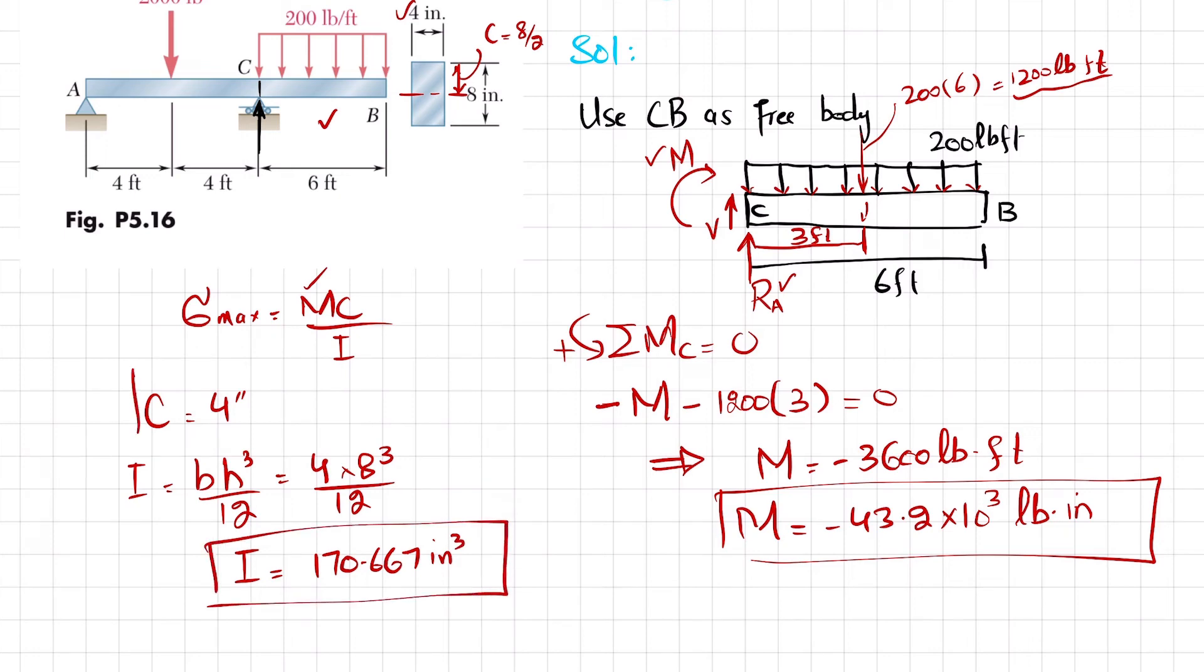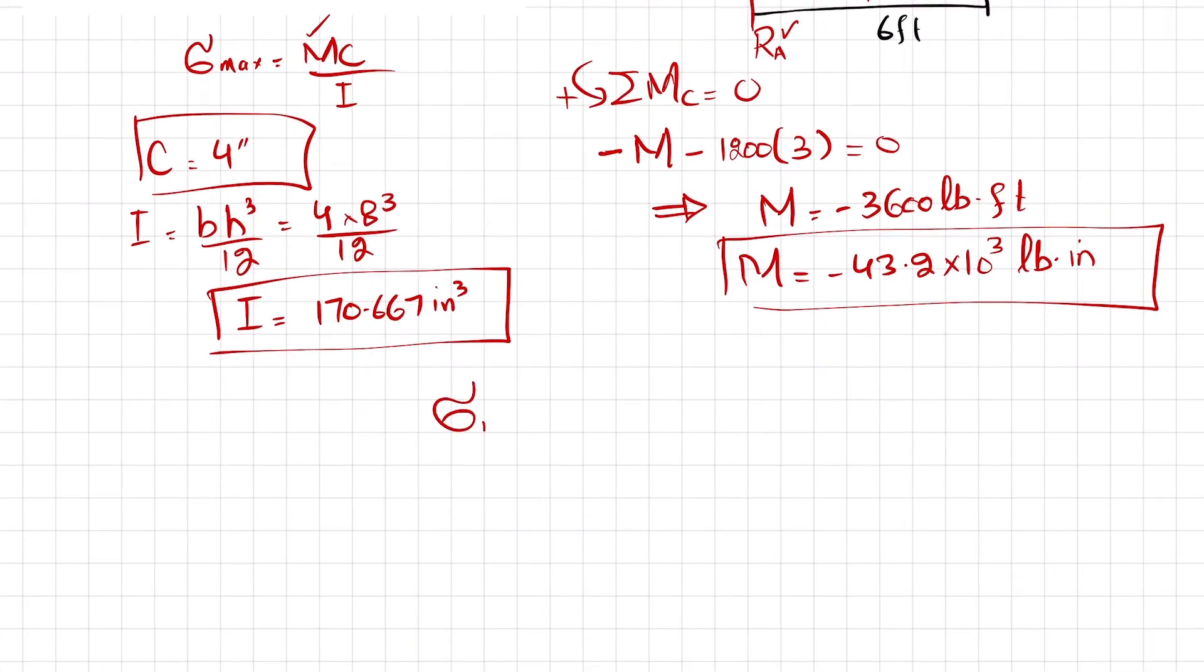Now you have all the values in this equation: M, C, and I. You can put it in this formula to get the maximum stress. So maximum stress is the absolute value of moment minus 43.2 times 10 to the power 3. We take the absolute value because we need maximum stress. Plus and minus means tensile or compressive stress.